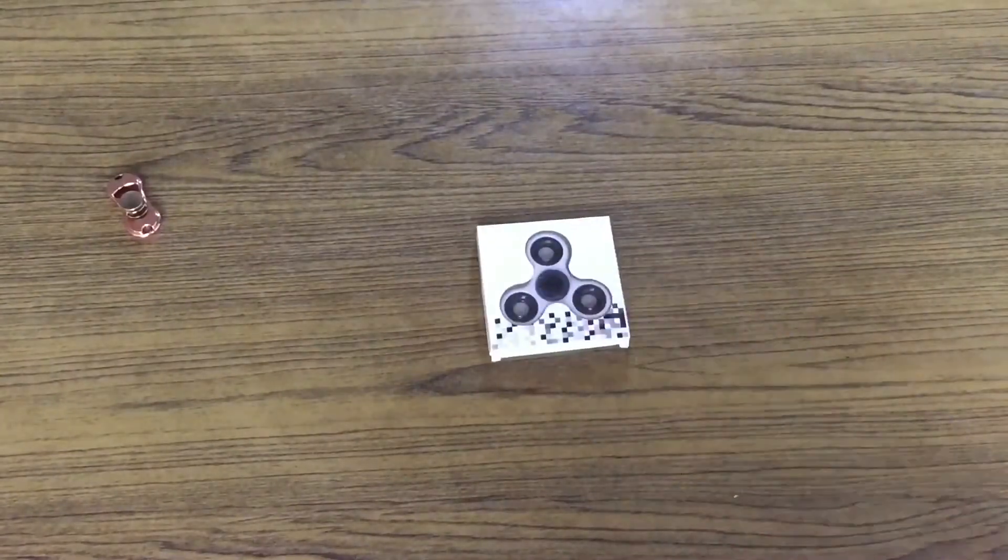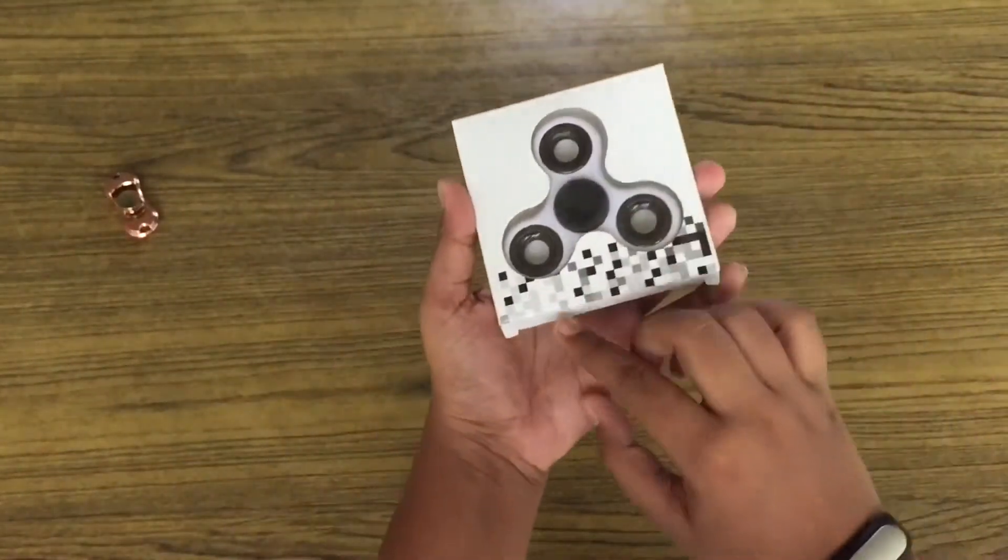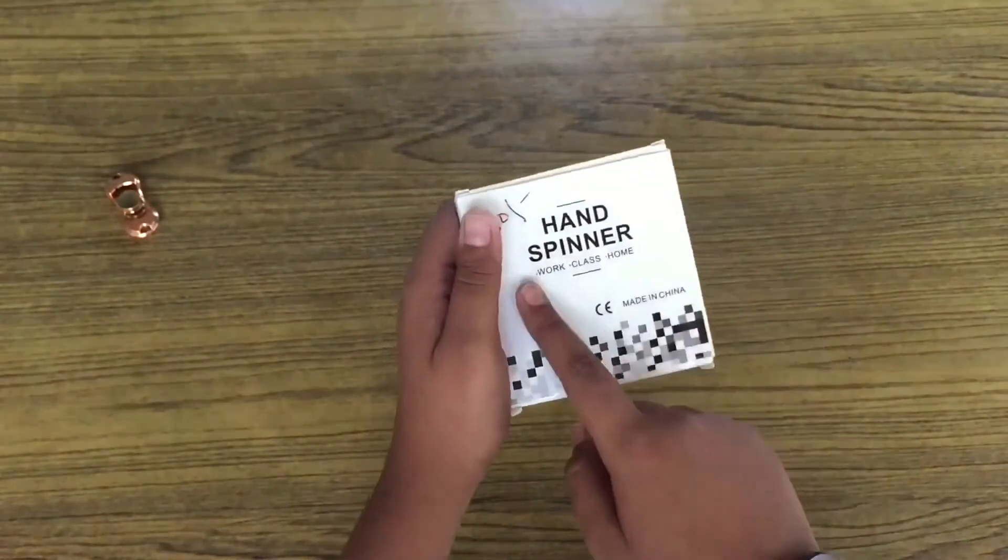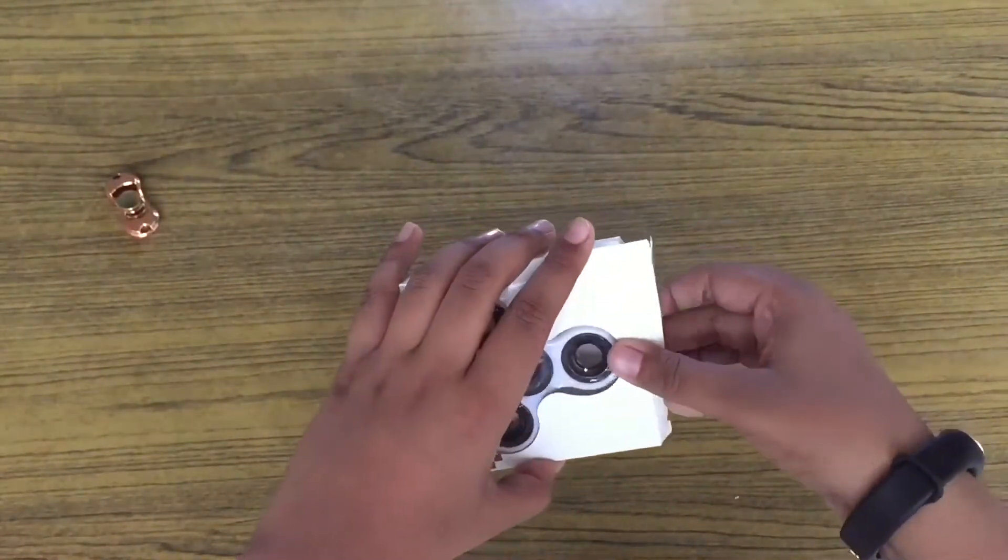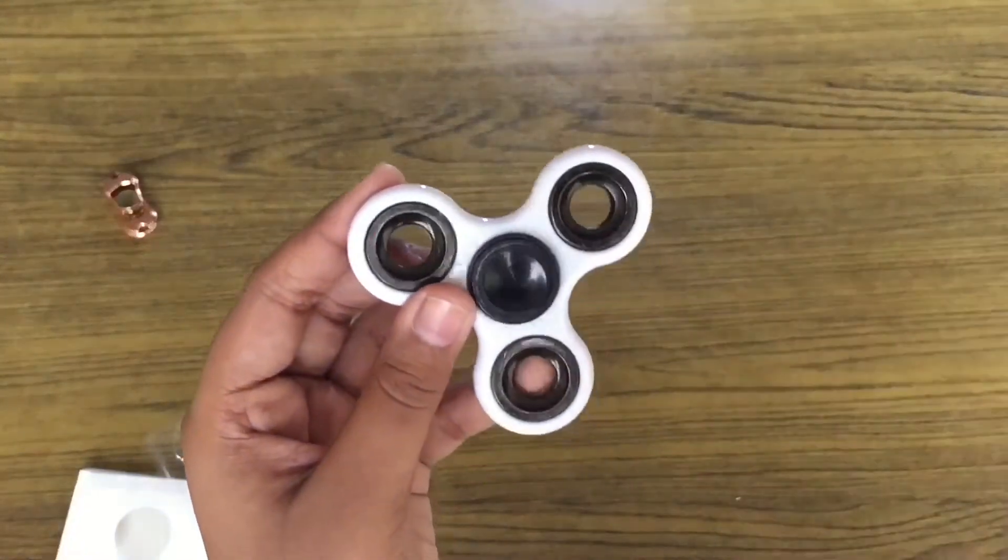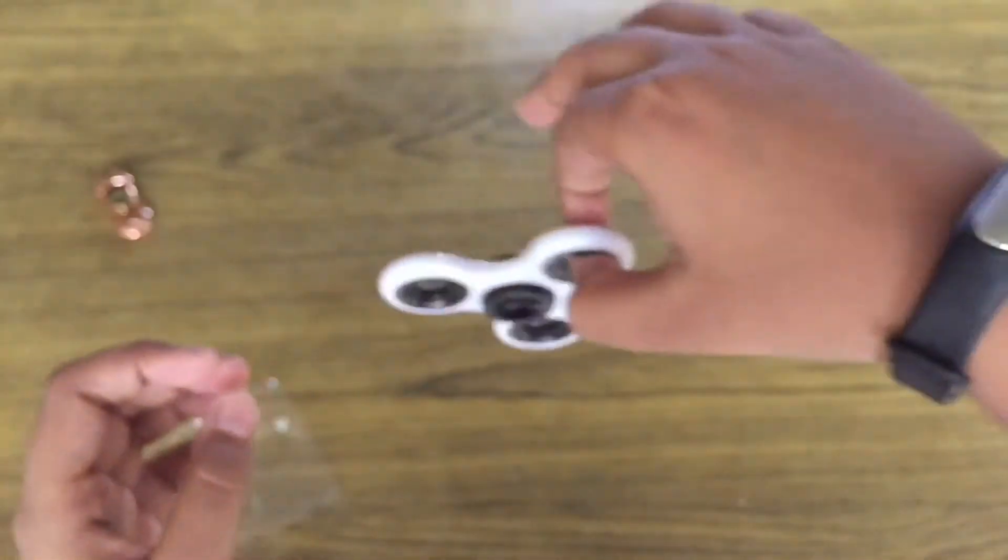Next is this typical classic tri-spinner. As you can see, this is the box with some square patterns. It says hand spinner at the back, made in China. So let's unbox it. This is the fidget spinner. As you can see, these are metal weights, they're not bearings.